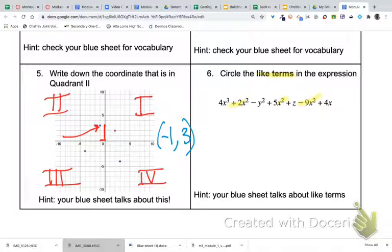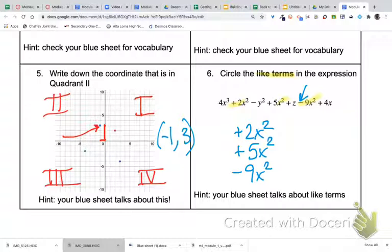So if you don't have this written out on paper or if you don't have this on paper so you can highlight, you can also type in plus 2x squared, plus 5x squared, and minus 9x squared. Make sure that you include that minus and that plus and that plus in your response because that is part of the like term.